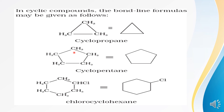Another example: cyclopentane — one, two, three, four, five carbon atoms present in a closed loop or ring. Each carbon atom is bonded with two other carbon atoms by single covalent bonds, and the remaining two electrons of each carbon are shared with two different hydrogen atoms. To represent cyclopentane as a bond line formula, I simply remove the carbon and hydrogen symbols and get a pentagon, where every corner of the pentagon indicates a carbon bonded with two hydrogen atoms.